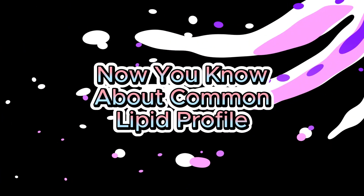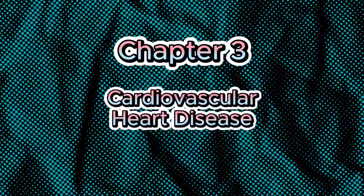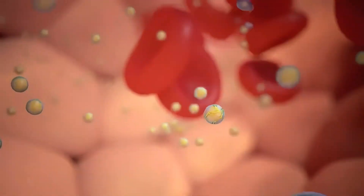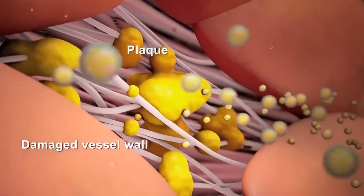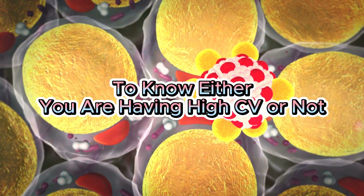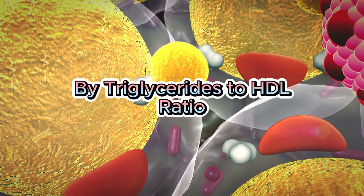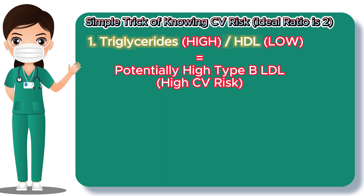After learning about the common lipid profiles in a blood test, let's go to Chapter 3: Cardiovascular Heart Disease. Having gone through the first two chapters, we can see that LDL is not totally bad — it's only part of LDL that potentially brings cardiovascular disease risk. There is a simple trick to assess your cardiovascular risk by looking at the HDL to triglycerides ratio. If your triglycerides are high but your HDL is low, chances are you have more of the potentially problematic type B LDL, or small-size cholesterol particles. The ideal ratio of triglycerides to HDL is less than 2.